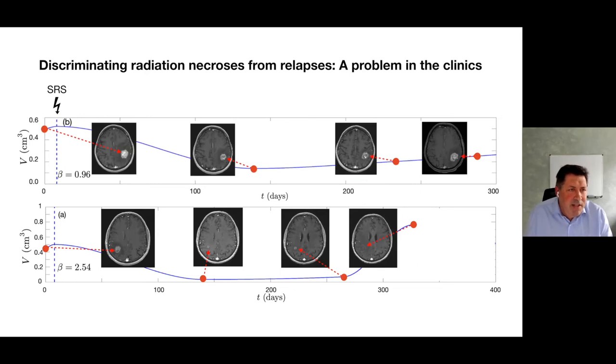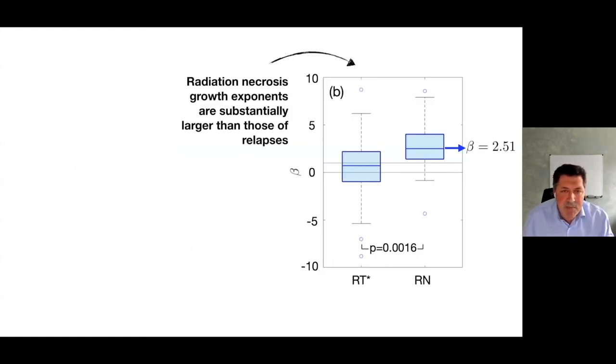Finally, it's very interesting you can use those exponents to discriminate radiation necrosis from relapses. This is a key problem in the clinics. You treat the tumor with radiation therapy, and after some time you see the tumor is growing. The problem is sometimes the tumor regrowth as seen in MRIs is a real tumor regrowth. Other times it's not real regrowth but just inflammatory reaction. The problem is if it's tumor regrowth, you need to act promptly, go to classical surgery for instance, because radiation is typically not recommended. But if it's radiation necrosis, you shouldn't do anything. Just wait, and the inflammation will go back spontaneously.